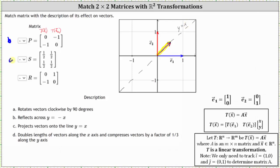Now let's take a look at matrix R. The first column of (0, -1) is the transformation of the vector (1, 0), or the vector E sub one. So let's graph the vector (0, -1), which is this vector here along the negative y-axis. This is the transformation of the vector E sub one. The second column is (1, 0), which is the transformation of the red vector, the vector E sub two. The vector (1, 0) is along the positive x-axis, this vector here.